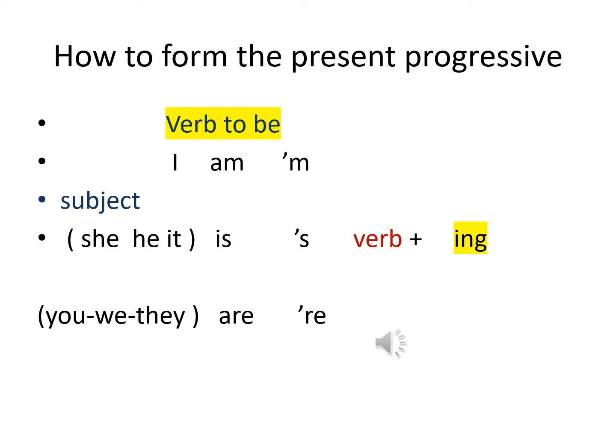The short forms are: am → apostrophe m ('m), is → apostrophe s ('s), and are → apostrophe re ('re). Let's say it again: verb to be + verb + ING.